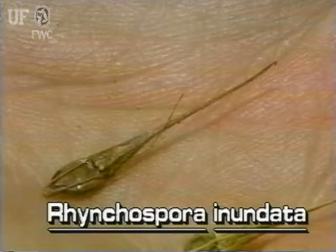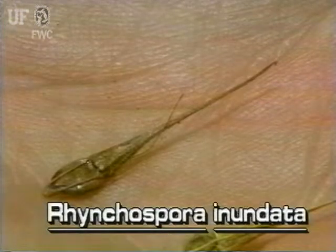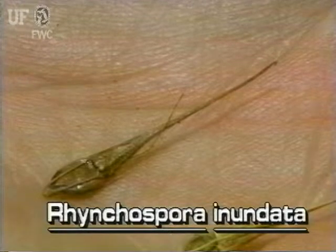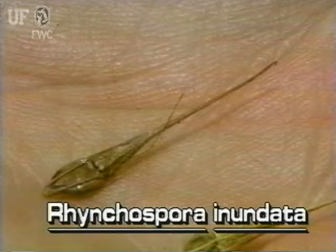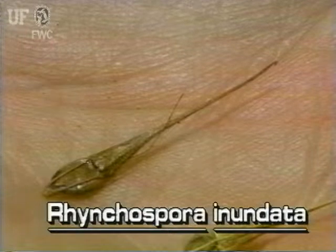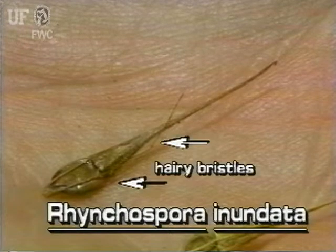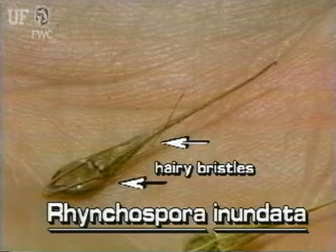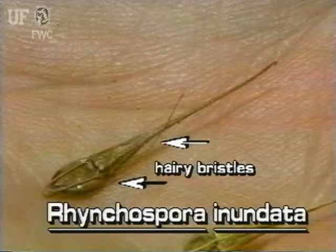One of the best identifying characteristics of inundated beak rush is its fruit. Each fruit has a long beak at the tip and several long hairy bristles arising from its base, which are longer than the fruit.